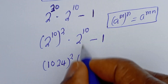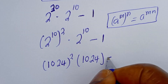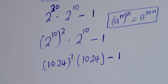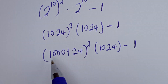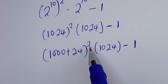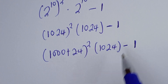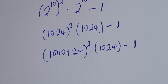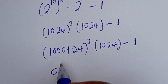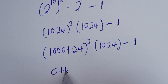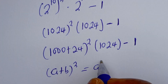Multiplied by 2 to the power of 10, that is 1024, minus 1. So 1024 squared is written as 1000 plus 24, all squared, multiplied by 1024, then everything minus 1. Take note that if you have a plus b, all squared, this is equal to a squared plus 2ab plus b squared.